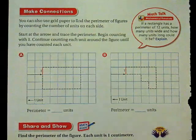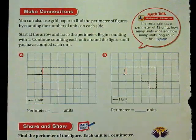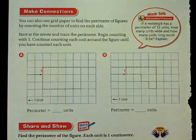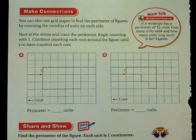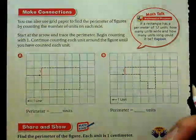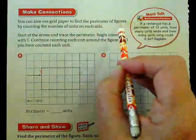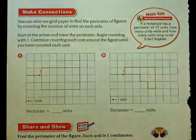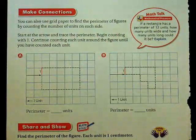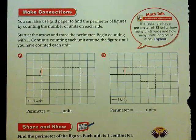So let's make some connections. We used the geoboard and dot paper on the previous slide to find perimeter of a rectangle, but you can also use grid paper to find the perimeter of figures by counting the number of units on each side. You have to be careful when you do this that you don't miss a side.